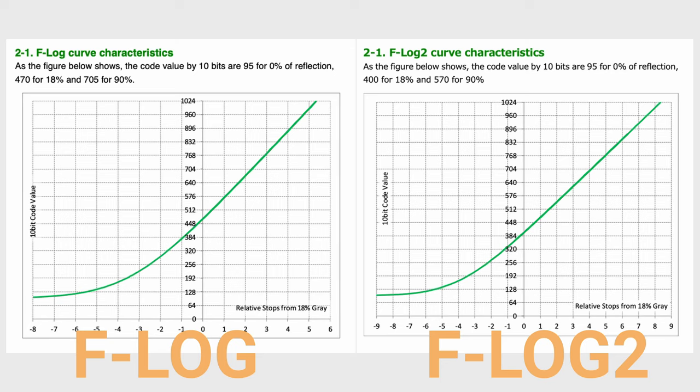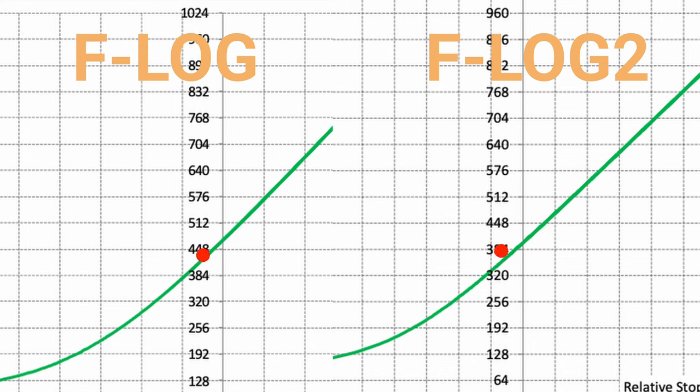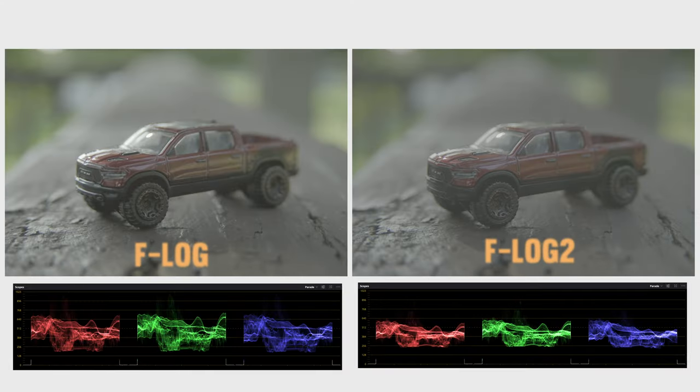Some people were complaining that the base ISO for F-Log 2 is 1250, versus the 640 base ISO for F-Log. If you look at the log curve chart for F-Log and F-Log 2 on the Fujifilm website, you'll see the middle gray point is lower for F-Log 2. Having a lower middle gray point gives you more information in the midtones. I'd highly recommend watching Gerald Undone's breakdown of dynamic range and ISO for the XH2S — fantastic findings from a very technical standpoint.